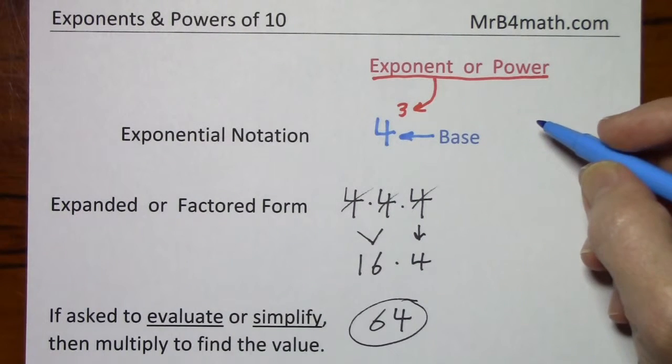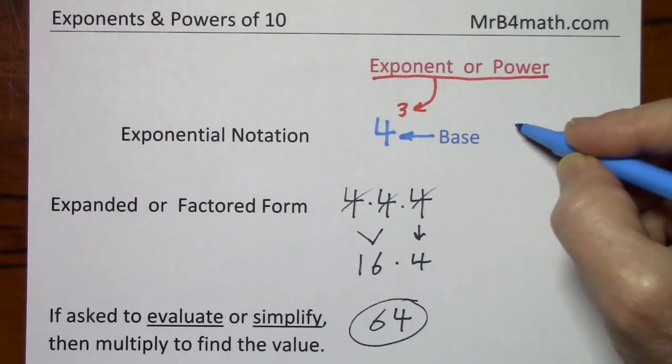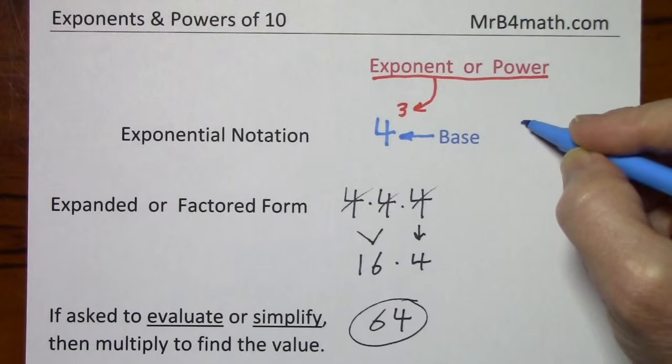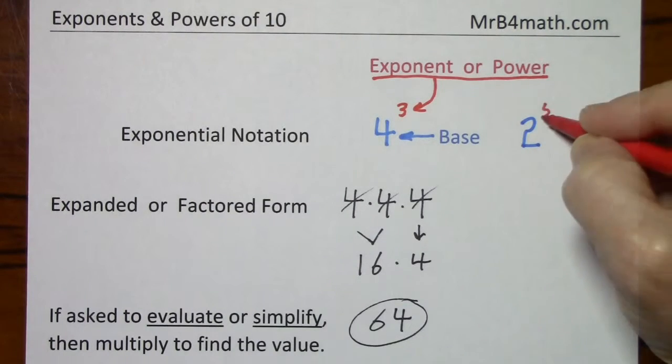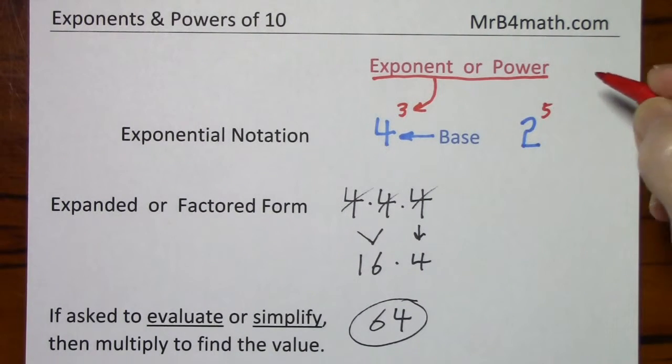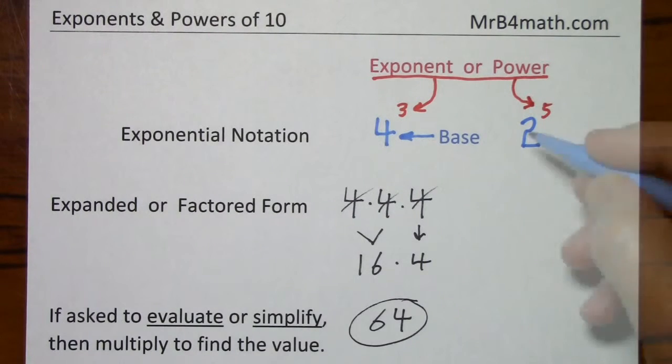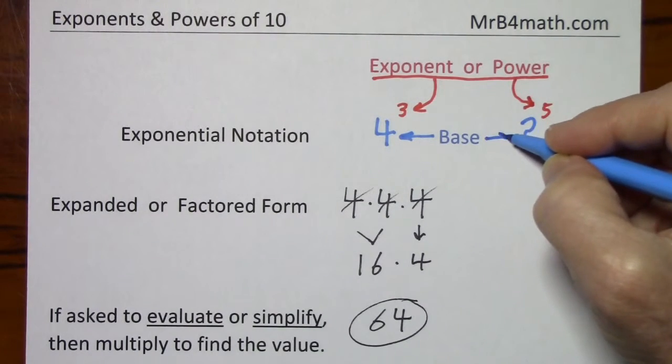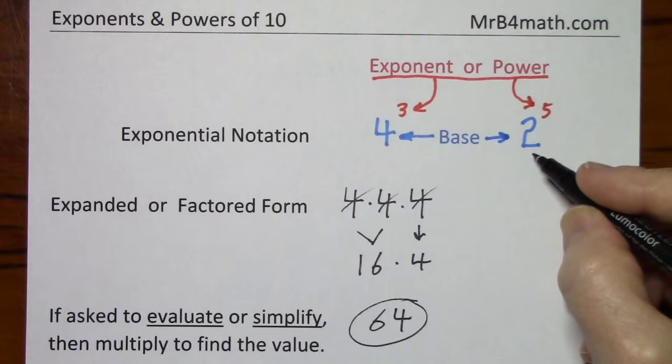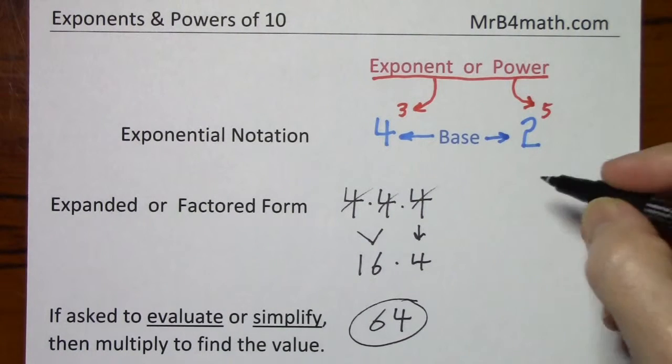Another example of a number in exponential notation would be 2 to the 5th. And again, this 5 is the exponent or the power. The 2 is the base. Writing this in expanded form or factored form.